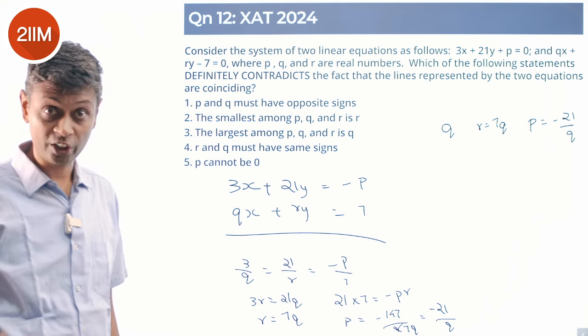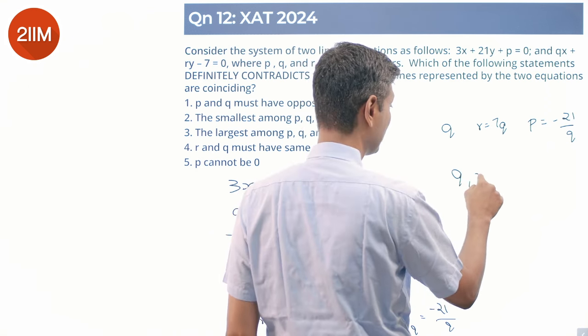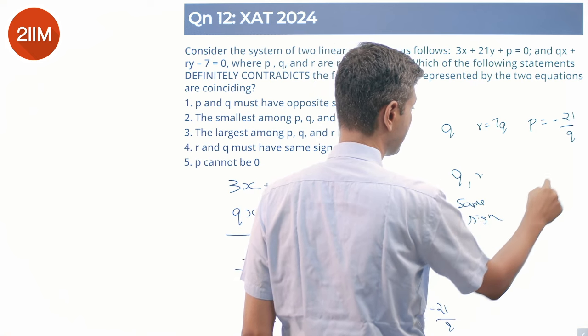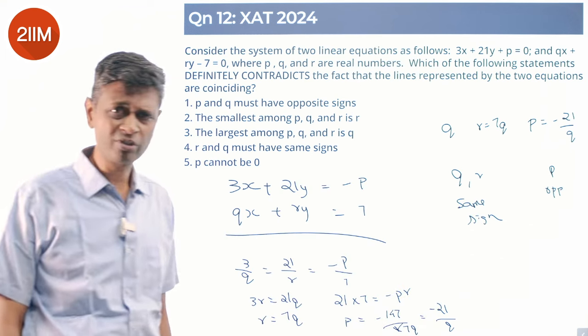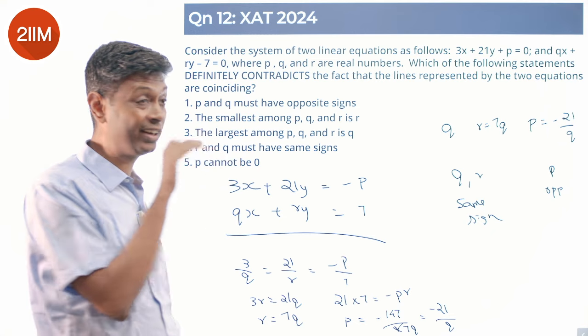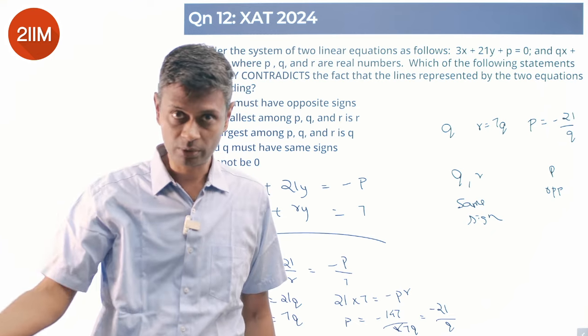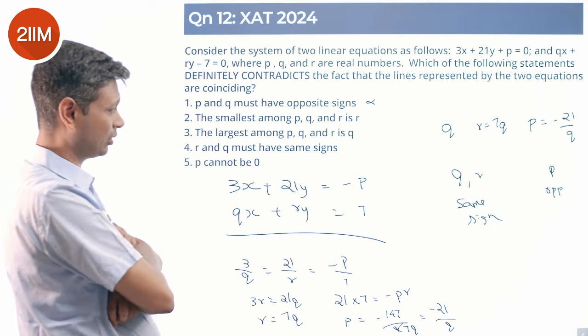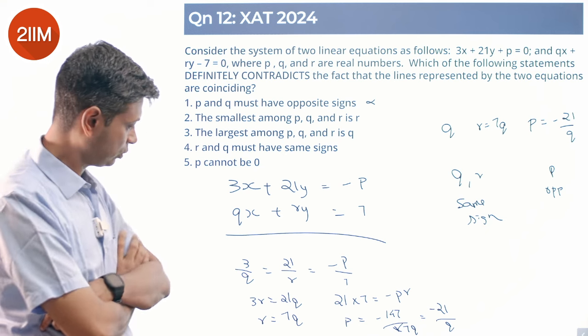So q and r have the same sign, p is opposite. So if p and q have opposite signs, yes, this could work, so this doesn't contradict. If p and q must have the same sign, then we can say it's not possible, and so it's not contradicting that.